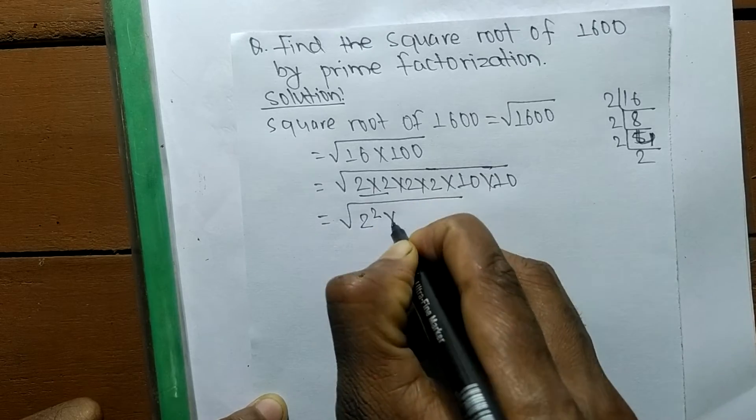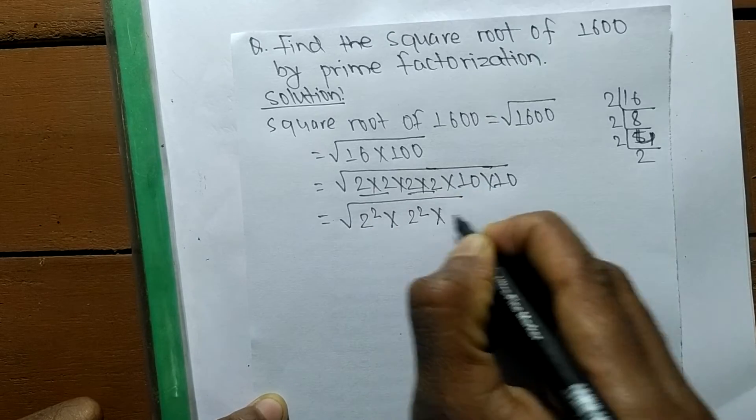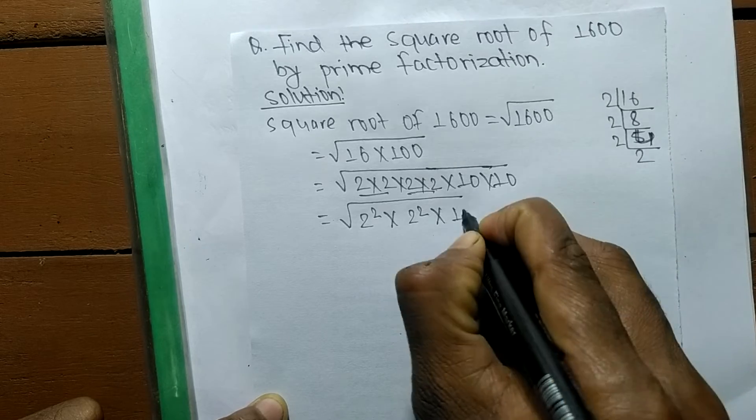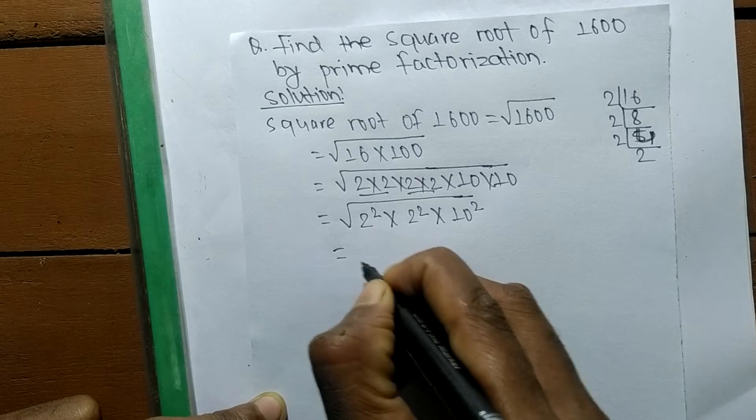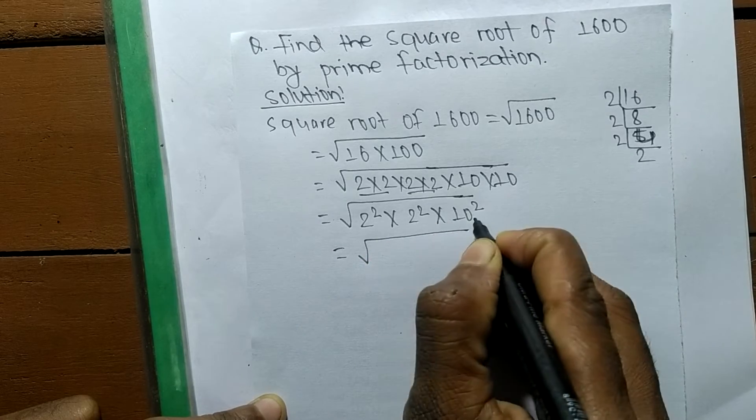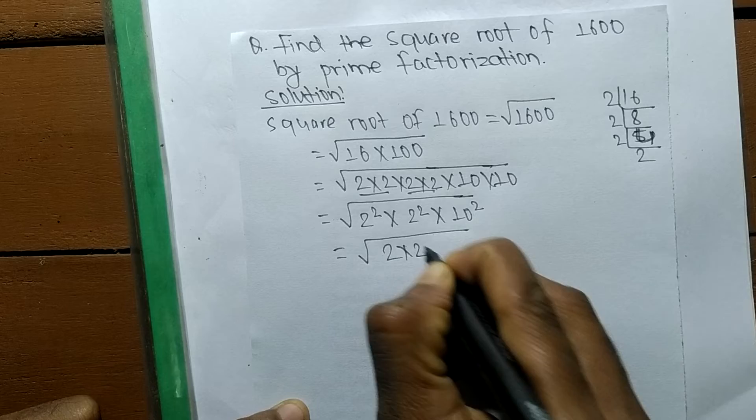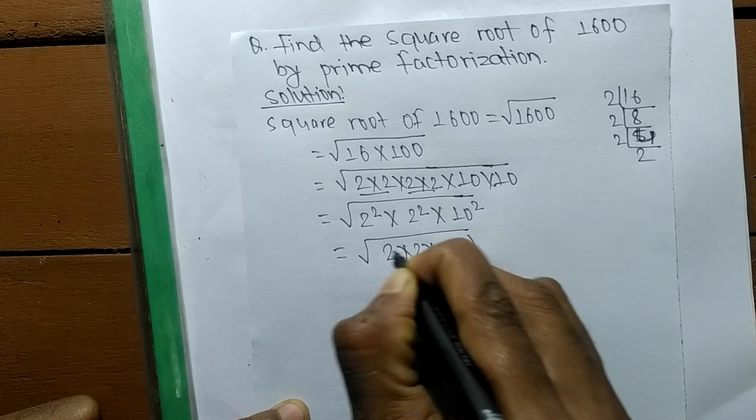10 into 10 means 10 squared. As you look closely, all the numbers contain a square, so we can take 2 into 2 into 10 whole square.